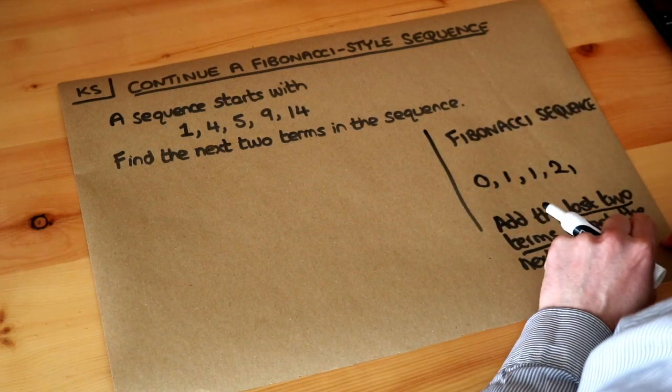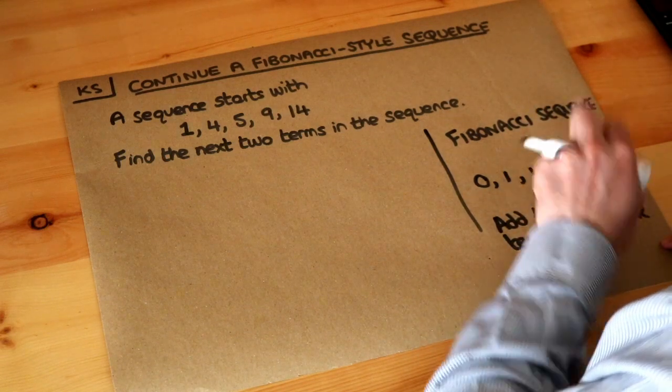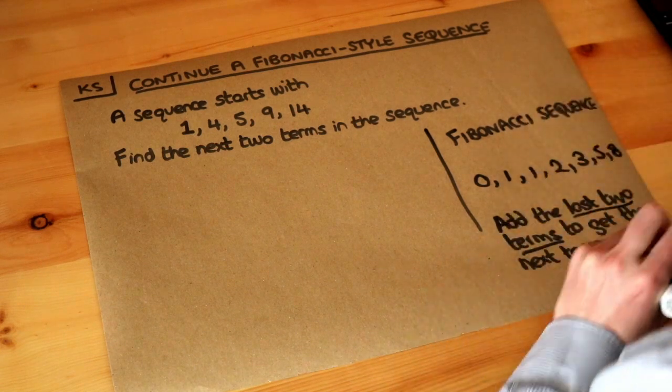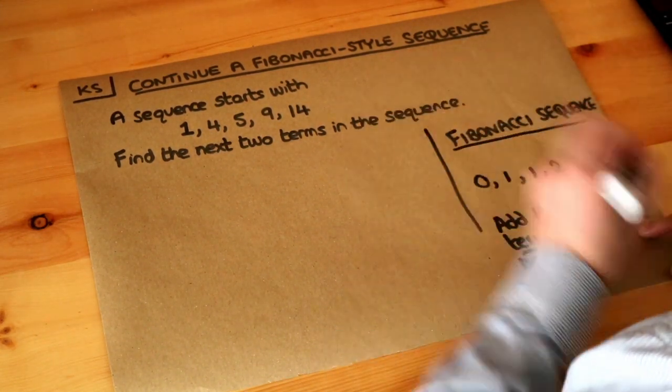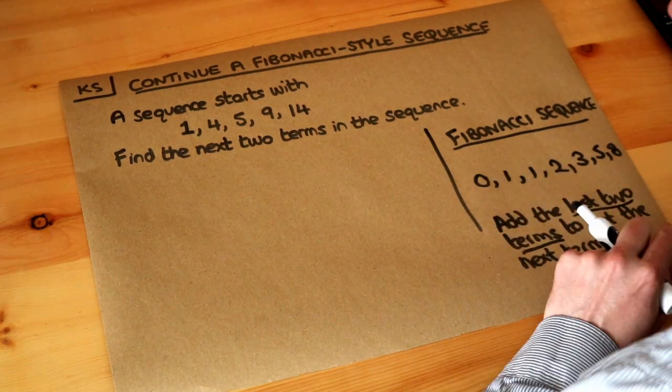And then we add the last two terms. 2 plus 1 is 3. And then we add the last two terms. 3 plus 2 is 5. 5 plus 3 is 8. And that goes on forever. So that is the Fibonacci sequence. It's a very famous sequence. And we're just adding the last two terms to get the next one.